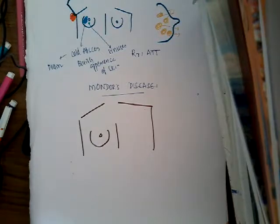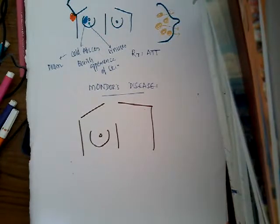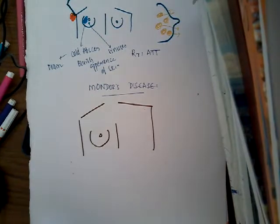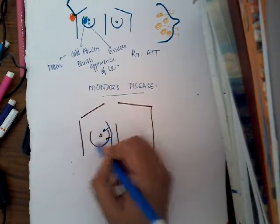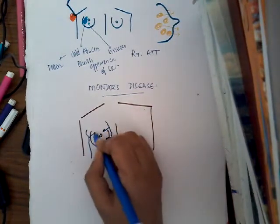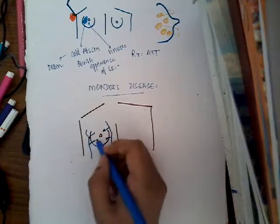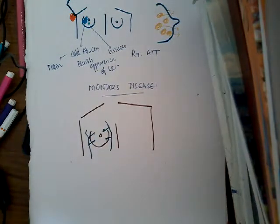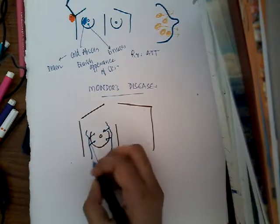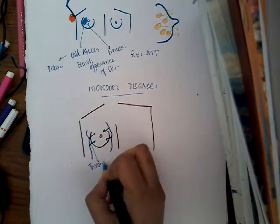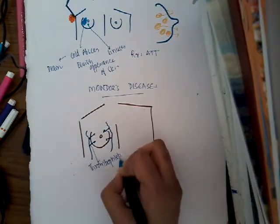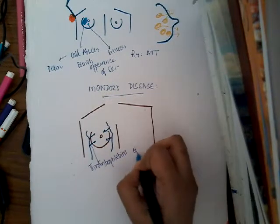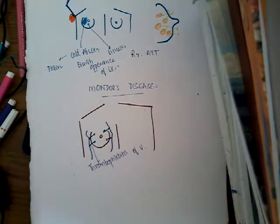Mondor's disease is called thrombophlebitis of superficial veins of the breast and the anterior chest wall. The veins which are there undergo thrombophlebitis — that is, there is inflammation in these veins. This inflammation or thrombophlebitis of these veins is called Mondor's disease.